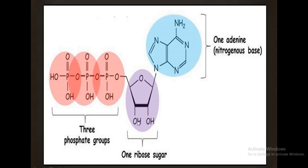A nucleotide structure consists of a base, a sugar, plus a phosphate group. When you have all three — base, sugar, and phosphate group together — you have the whole structure. This structure is known as a nucleotide.